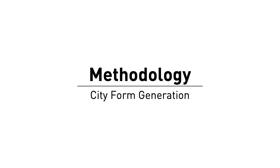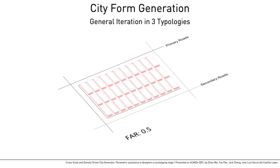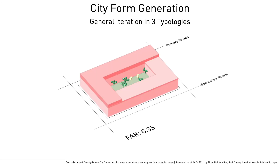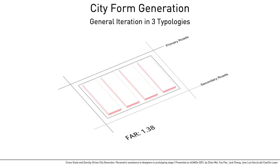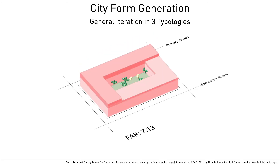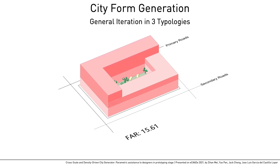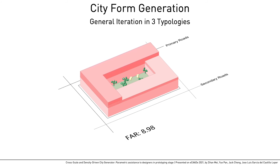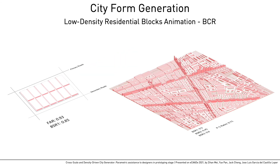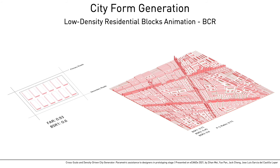City form generation takes in blocks with FAR and returns buildings in various typologies. The guiding logic aims to reflect the FAR regulation from the urban scale in building typologies. We concluded the relationship between building forms and FAR through various zoning documents in the U.S. The building forms are generalized into three categories. Low-density residential blocks are visualized as a group of single-family houses. The number of parcels decreases when FAR increases, and the spacing in between can be controlled by BCR from the user.